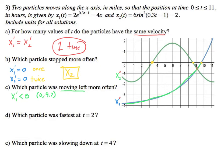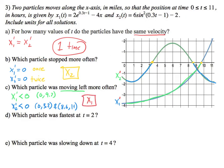v1's velocity is negative for almost all of the interval — from about 0 to 9.7. For x2, the velocity is negative from about 0 to 3.2, and then again from about 8.6 to 11. Comparing those intervals, x1 has the biggest interval of negative velocity, meaning it was moving left more often. So the answer is x1.